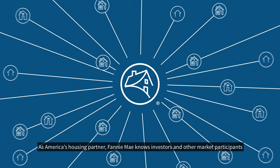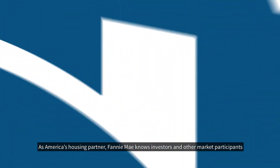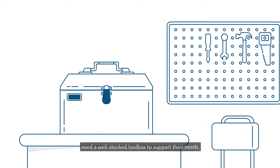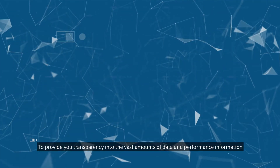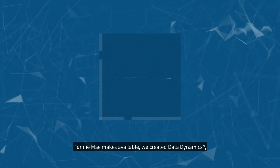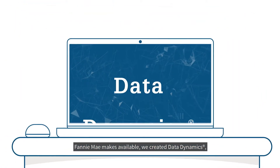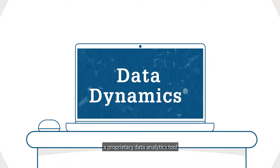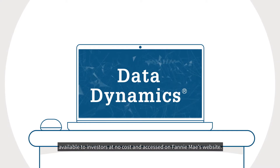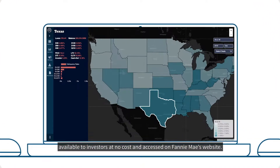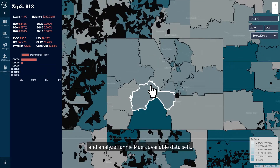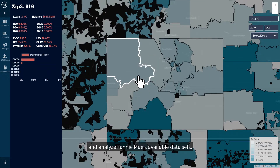As America's housing partner, Fannie Mae knows investors and other market participants need a well-stocked toolbox to support their needs. To provide you transparency into the vast amounts of data and performance information Fannie Mae makes available, we created Data Dynamics, a proprietary data analytics tool available to investors at no cost and accessed on Fannie Mae's website. Data Dynamics allows you to easily interact with and analyze Fannie Mae's available data sets.